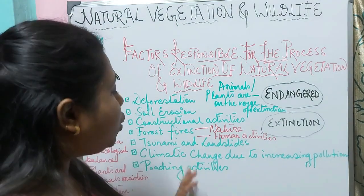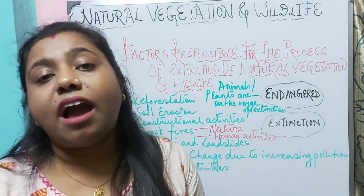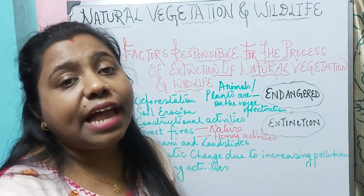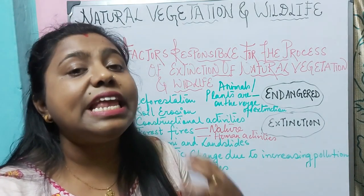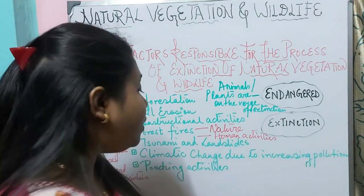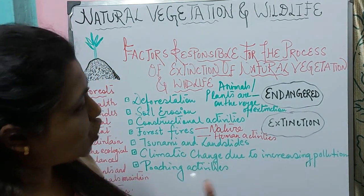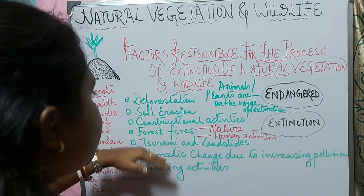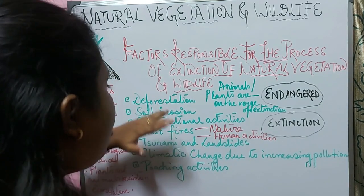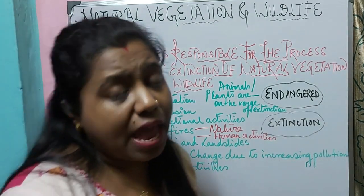The next factor is poaching activities. Poaching means the illegal trade and trafficking of animals — animals are illegally hunted or killed so that their skin, teeth, or bones can be traded. This illegal trading is referred to as poaching and is a very important factor leading to extinction. In summary, the factors causing extinction of wildlife and natural vegetation are: deforestation, soil erosion, construction activities, forest fire, tsunami and landslides, climatic change, and poaching activities.